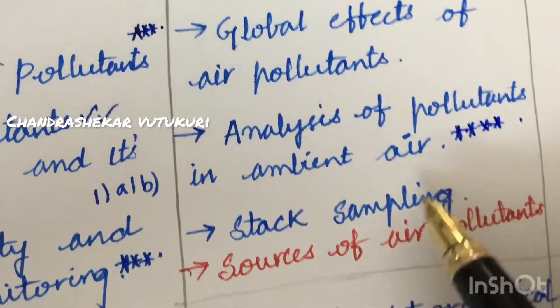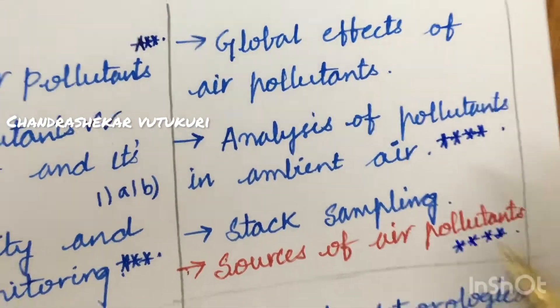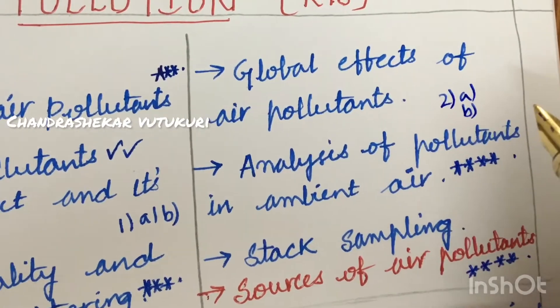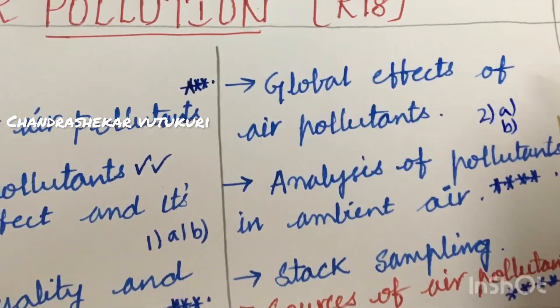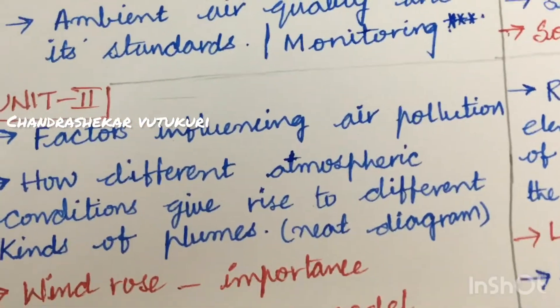And the stack sampling and the sources of air pollutants is said to be also very very important and gunshot question. And from this part, you can expect 2A as well as 2B, dear students. It is very easy to clear the subject and score if you are writing your exam very neatly and drawing all the diagrams only in pencil.